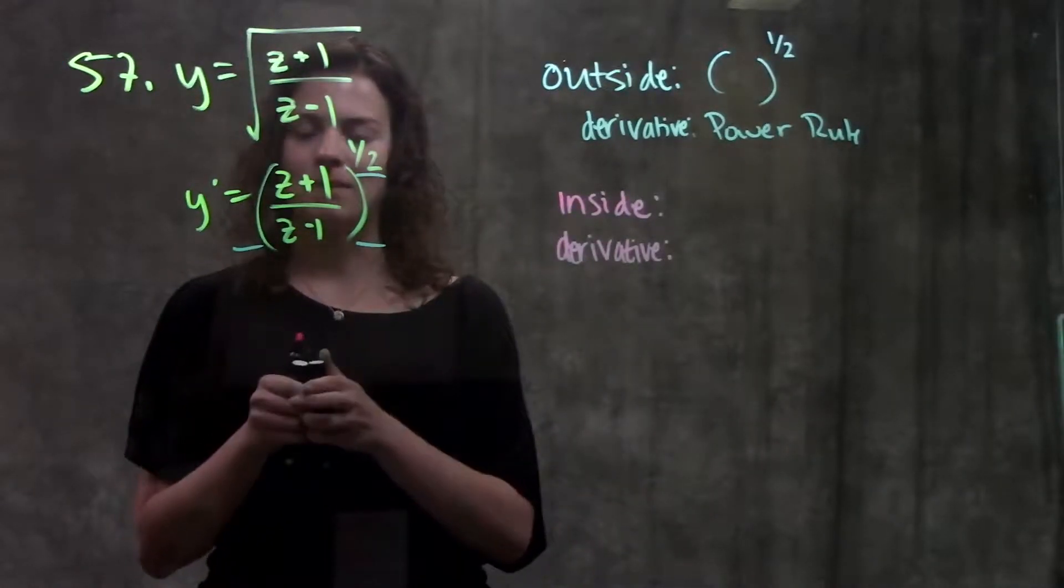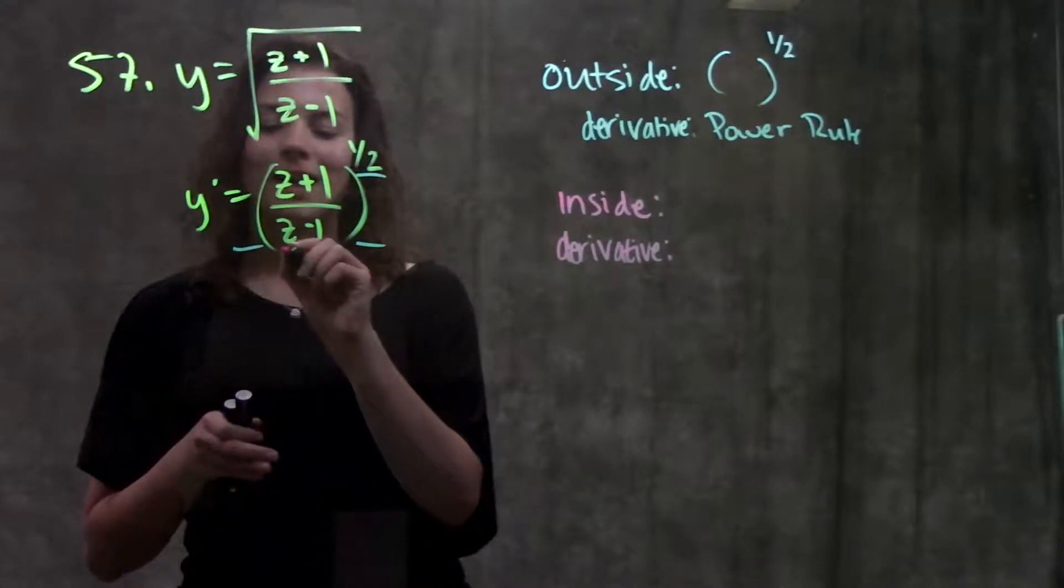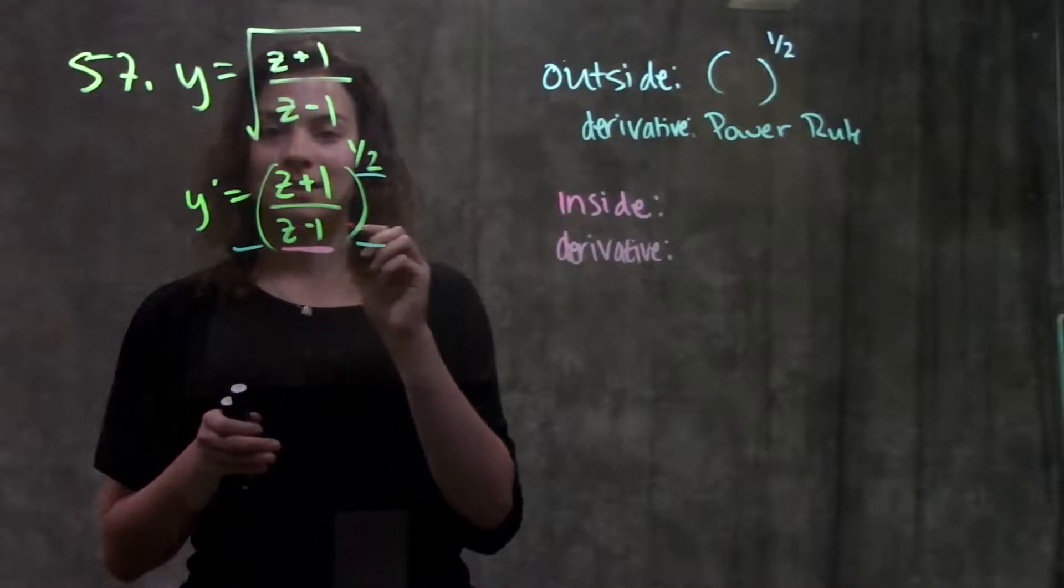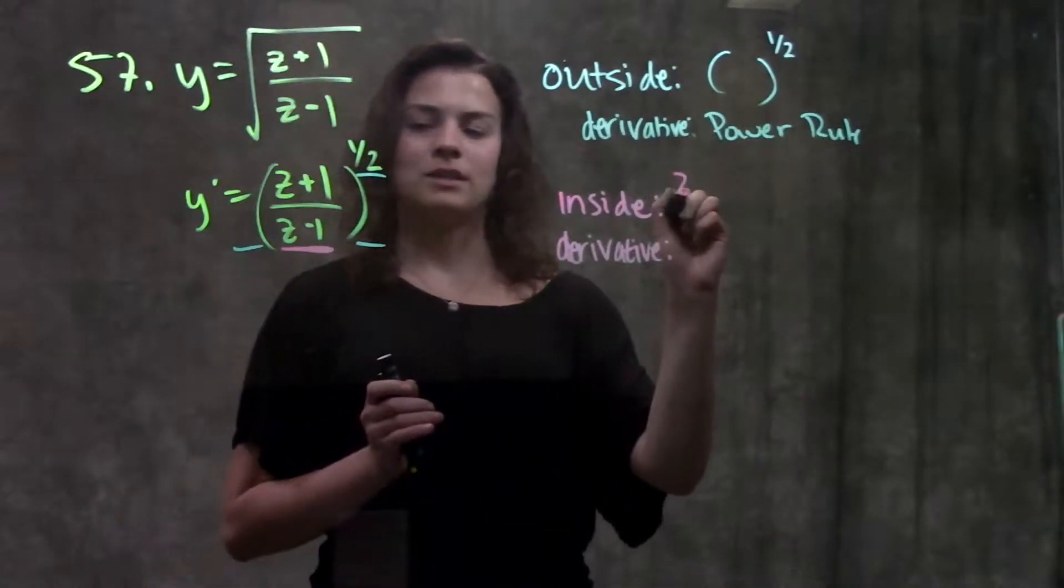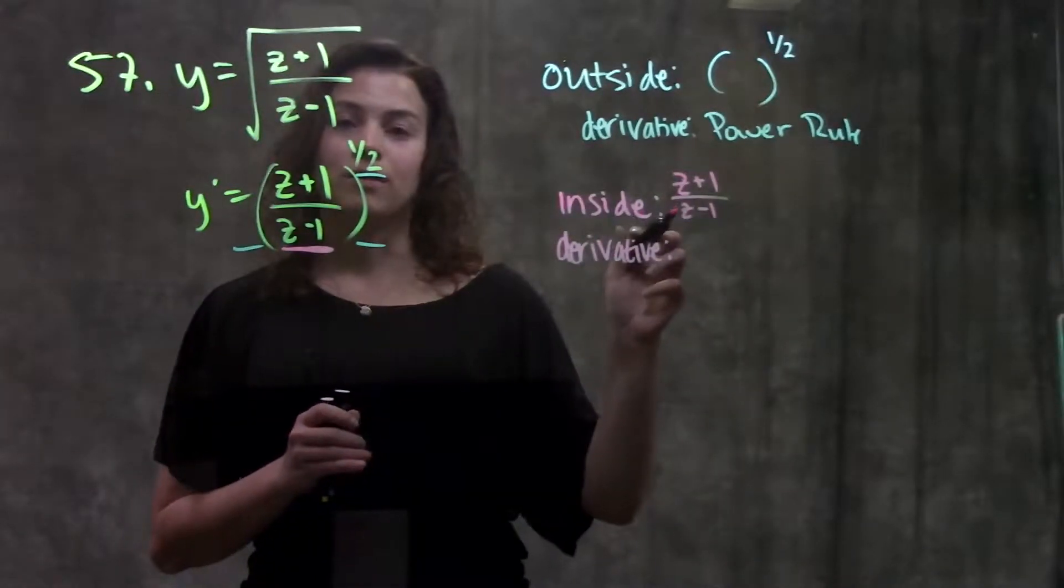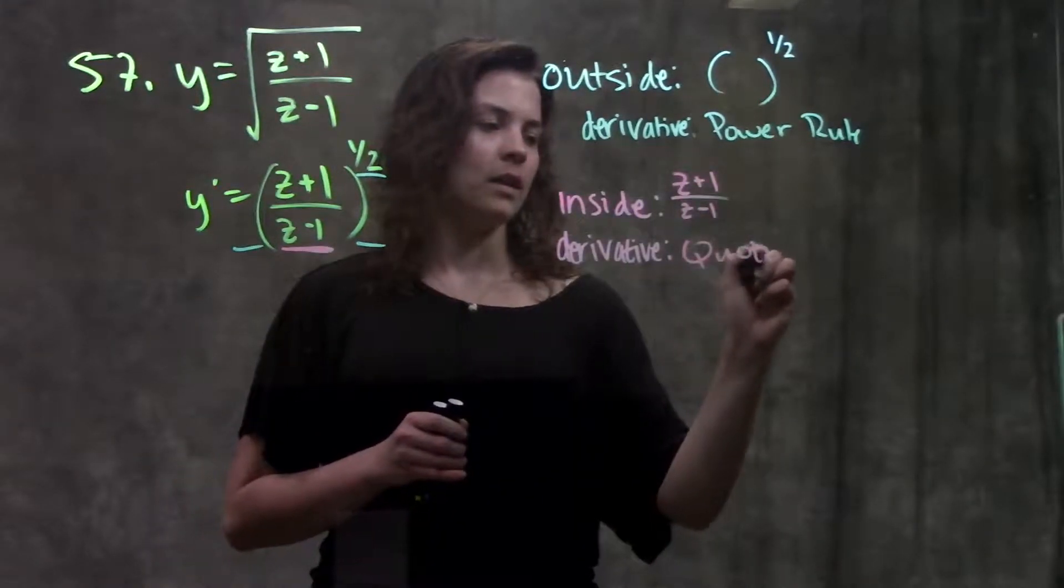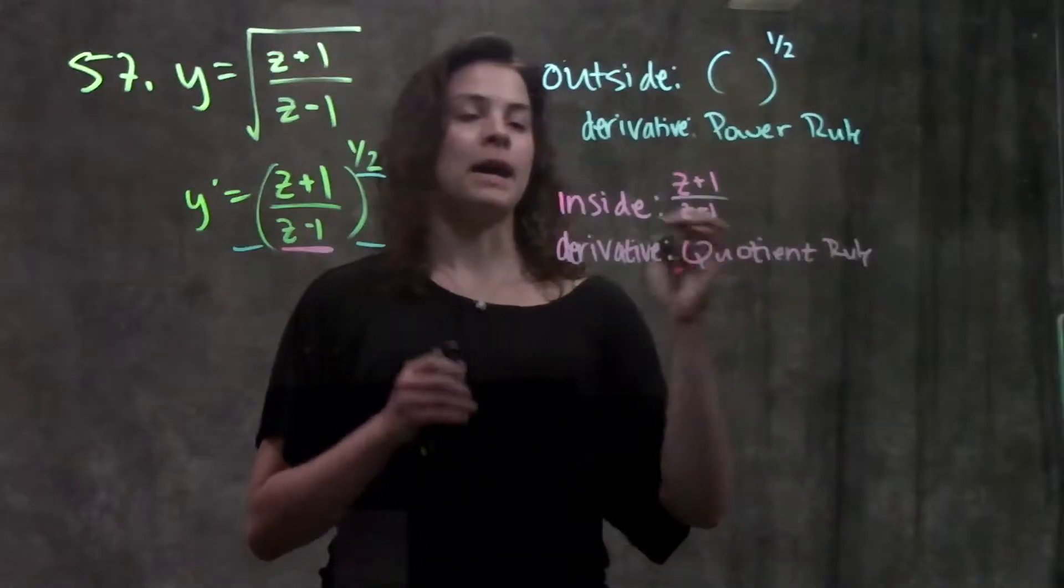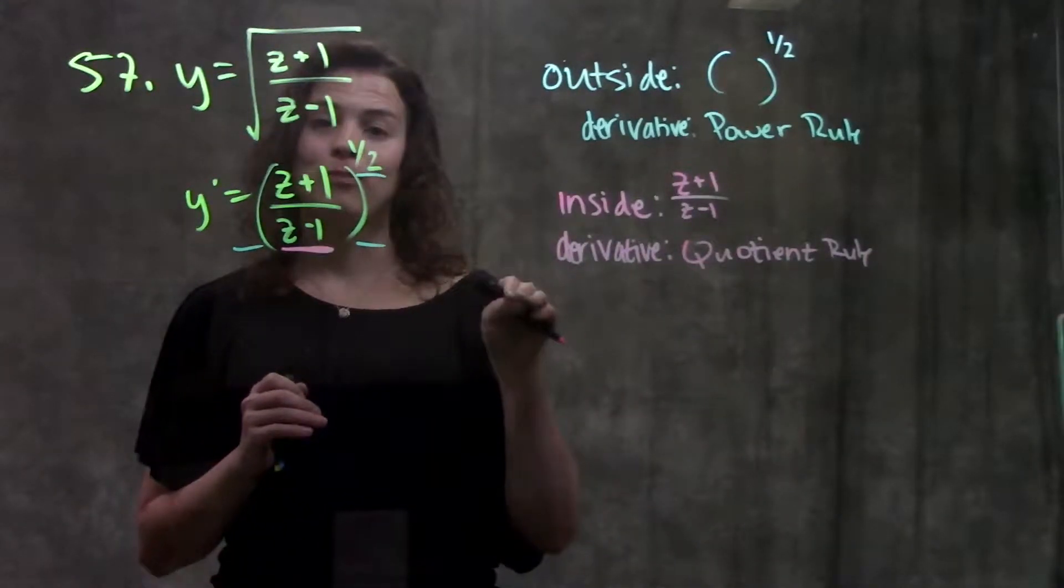So I have my outside function, now I'm going to look for my inside function. So if I were to zoom into this function, the next thing I see is this inside part, the something that's raised to the exponent. So my inside is just the z plus one over z minus one, and to take the derivative of this inside part, I'll need to use my quotient rule. So I've identified my outside function and my inside function. I know how to take the derivative of both.